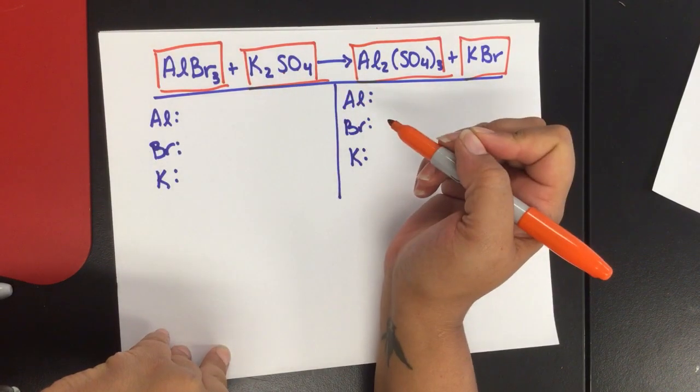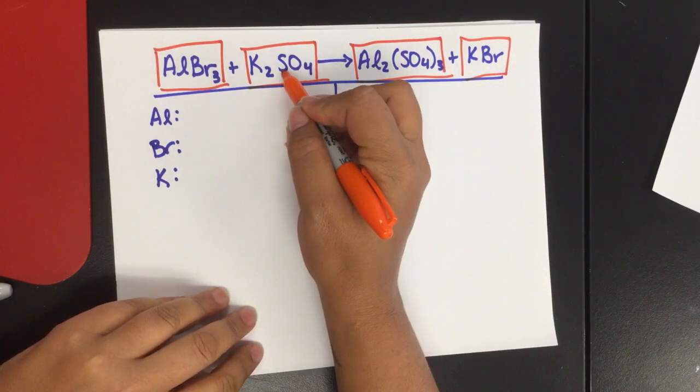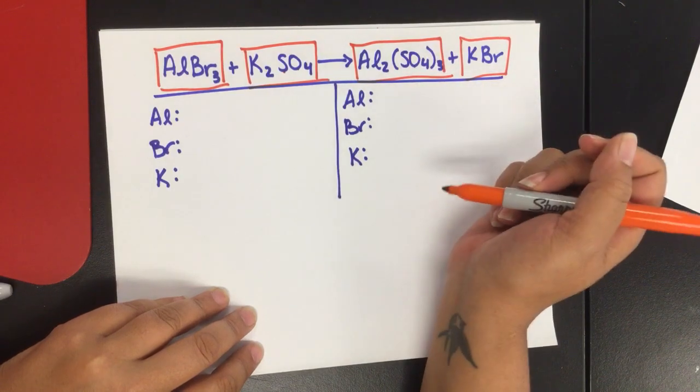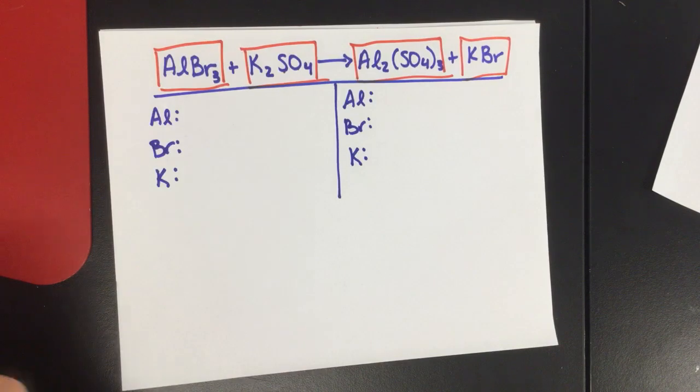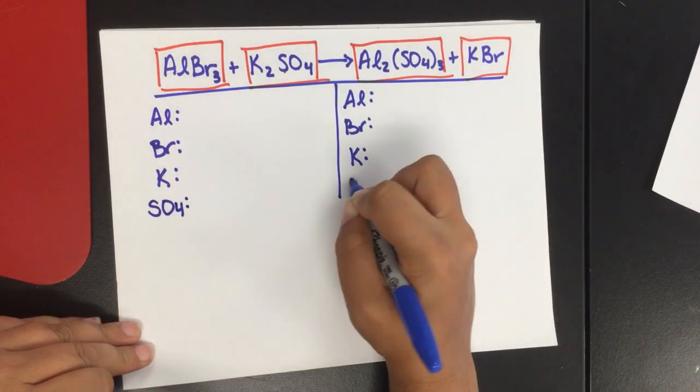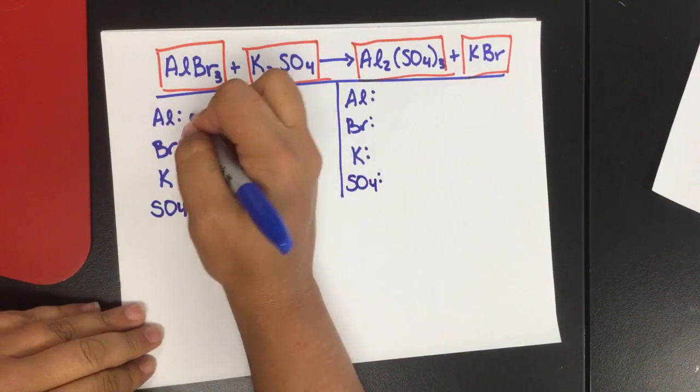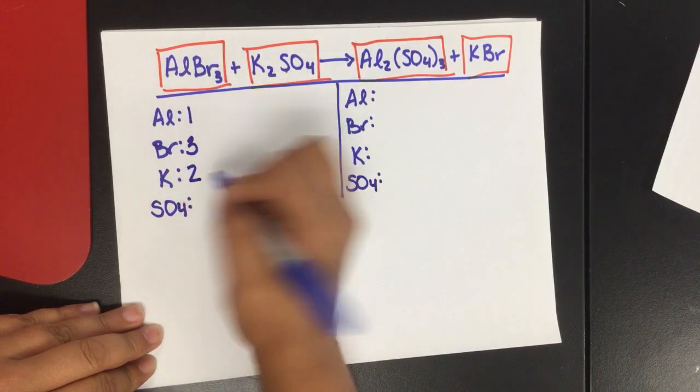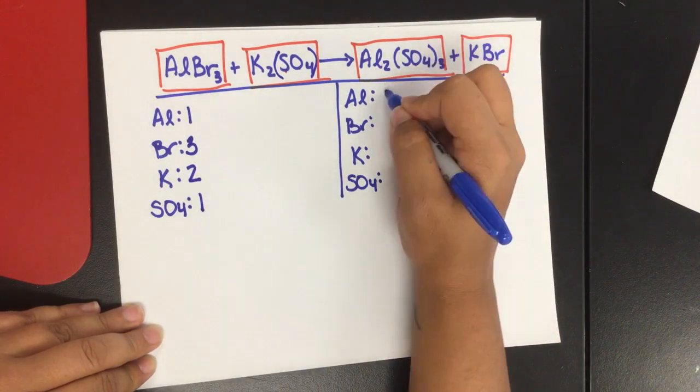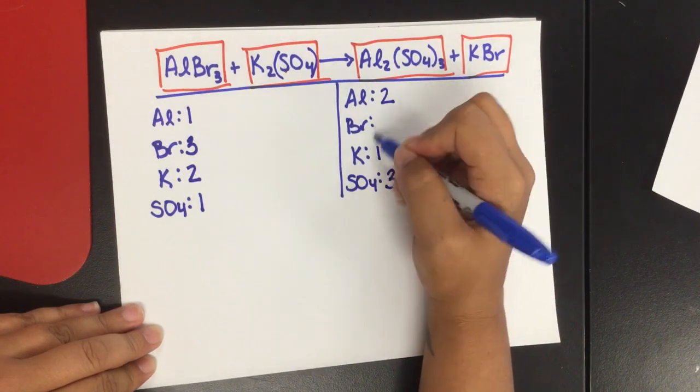It's one of those polyatomic ions we talked about. If you have a polyatomic, just like with bonding, you can treat it like it's one individual thing. So my polyatomic SO4 is nice over here and notice it's SO4 over here as well and it's in those parentheses. So rather than counting the sulfur and the oxygen separate, I can look at and say how many SO4 polyatomics do I have when I do my count? So in this case, if I do my counting, I have one aluminum, three bromine, two potassium, and one SO4. Over here, I have two aluminum, three SO4, one potassium, one bromine.